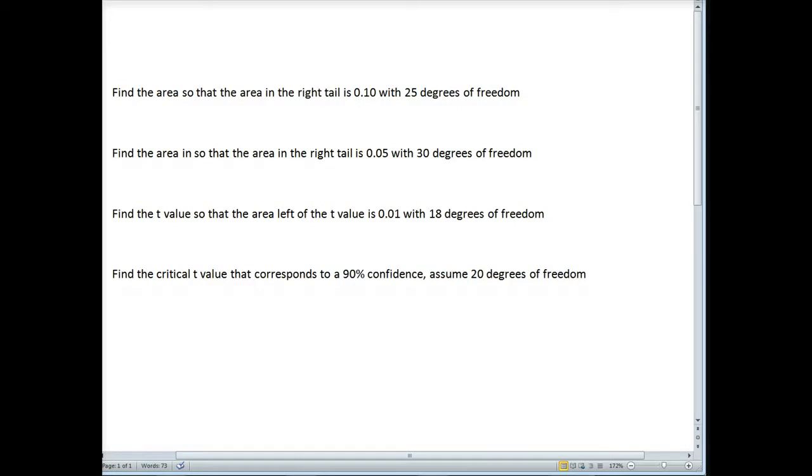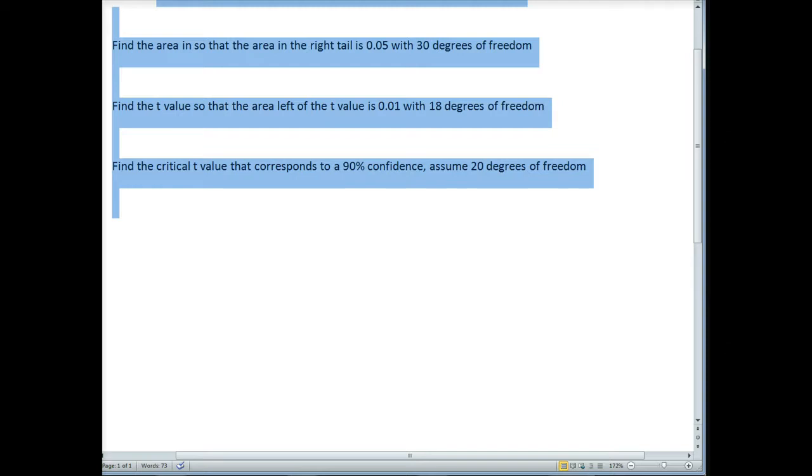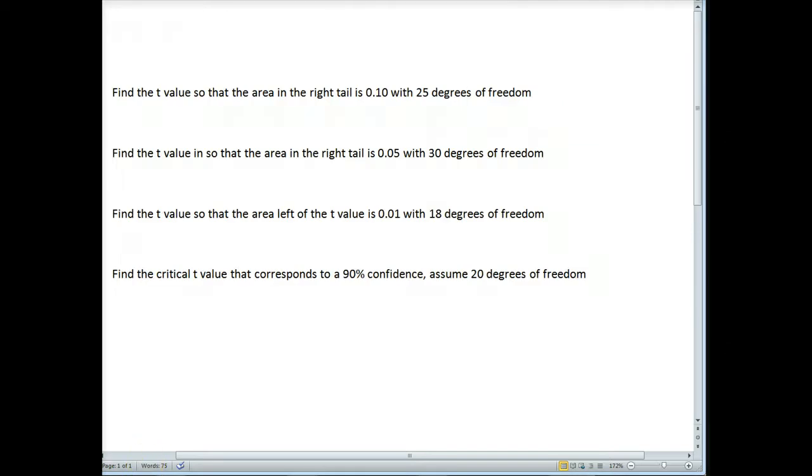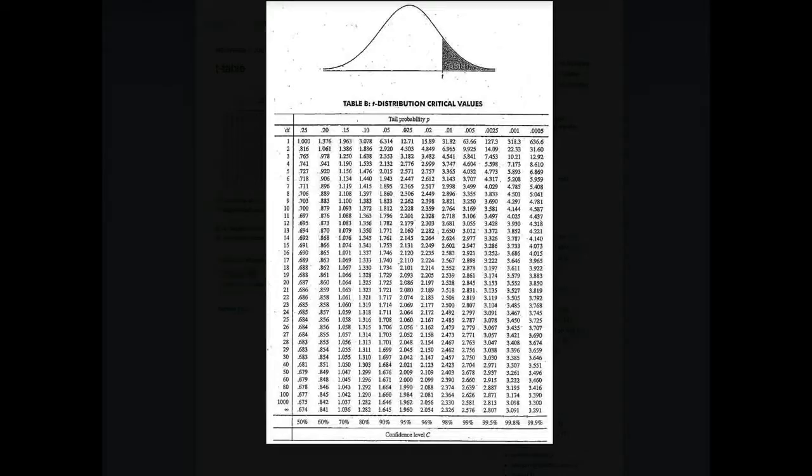We're going to always read this table to get our actual value. So find the area so that the area in the right tail is 0.10 with 25 degrees of freedom. We can use a t-reference table. This is one that very closely looks like what's in your book, however it is slightly different.